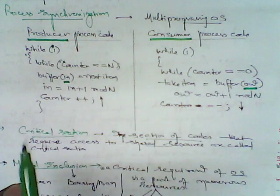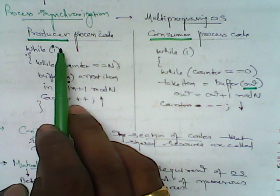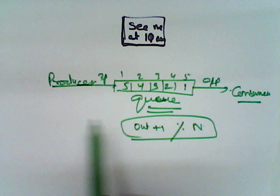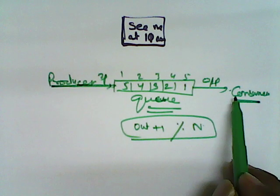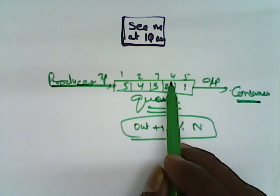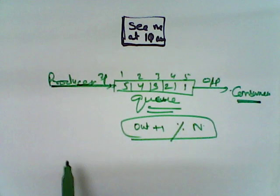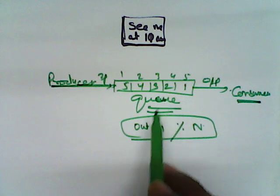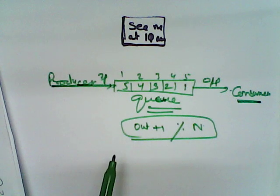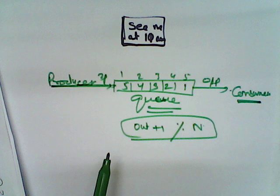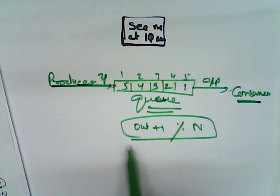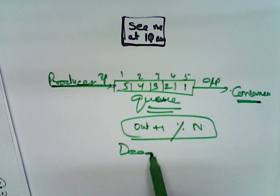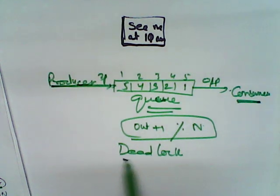If that blocking sequence arrives in the case of a particular process, we term it as a deadlock. Process synchronization should be there between producer and consumer — if there is a blocking scenario, it leads to a deadlock situation. Deadlock situations we should not permit.